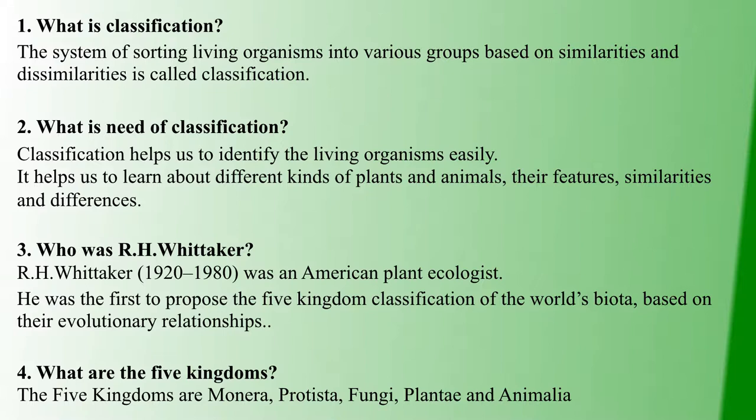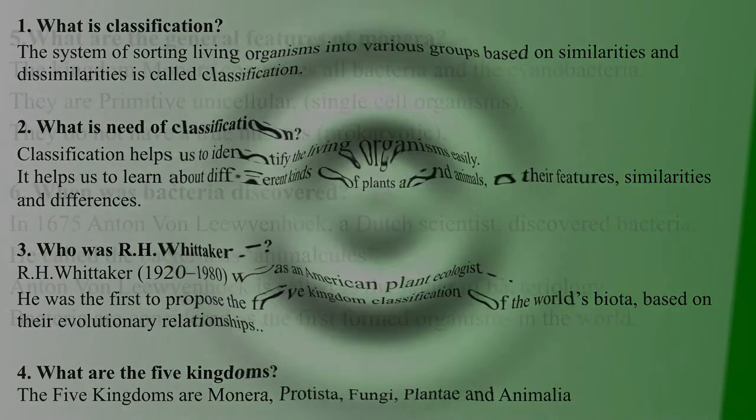The five kingdoms in R.H. Whittaker's classification are: Monera, Protista, Fungi, Plantae, and Animalia. These are the major classifications.